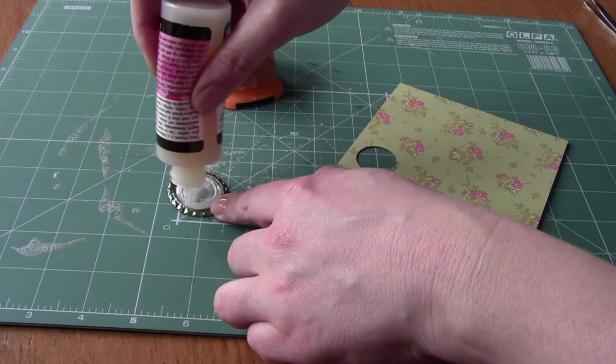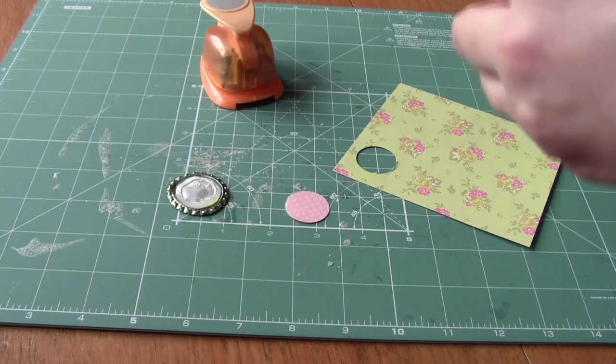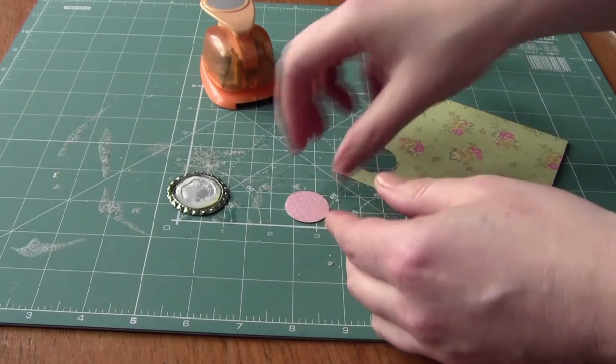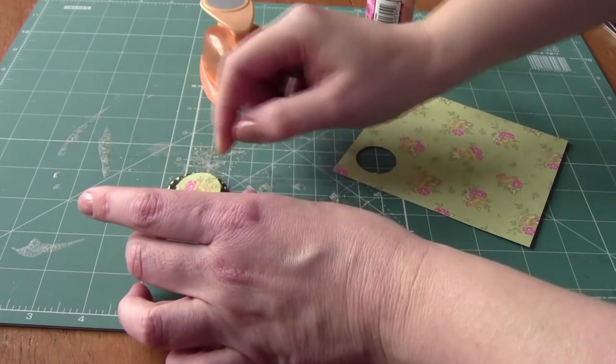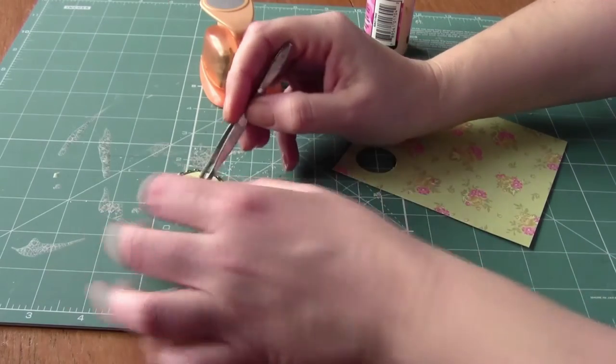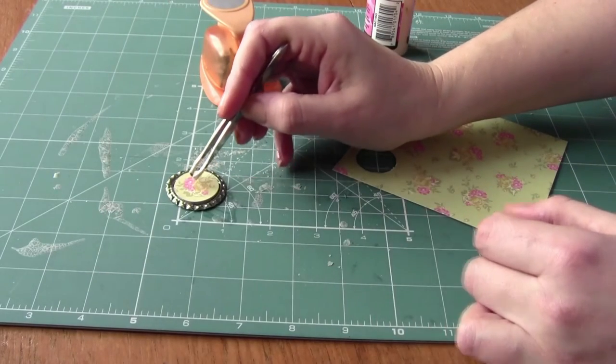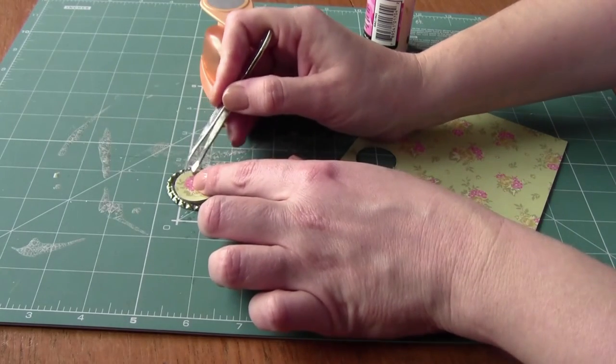Add a generous quantity of glossy accents around the inside edge of the flattened bottle cap and then taking your circle, place it onto the surface. Using a pair of tweezers, push down so that the paper sits flat on the bottle cap and the glossy accents act like a glue to help hold it in place.